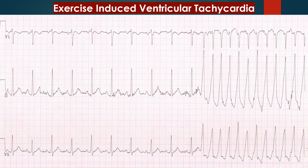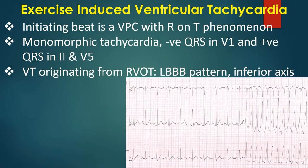Here is an ECG showing ventricular tachycardia occurring during a treadmill exercise test. The initiating beat is a ventricular ectopic beat with R-on-T phenomenon. It is a monomorphic tachycardia with negative QRS in V1 and positive QRS in leads 2 and V5. This could be a tachycardia originating from the right ventricular outflow tract, as it has an LBBB pattern and inferior axis.